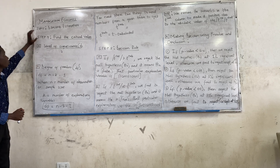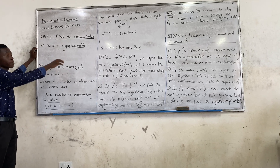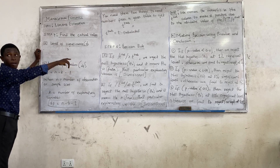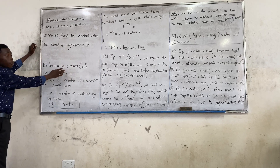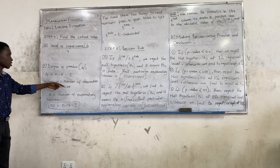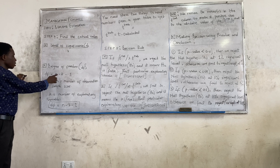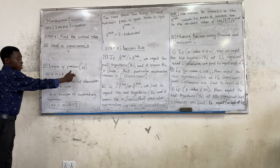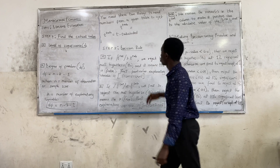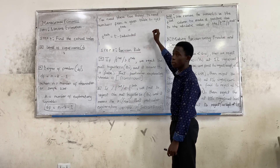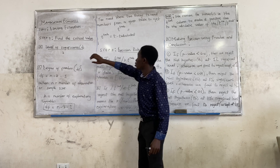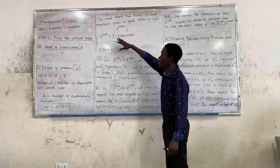Step four: find the critical values. We find the critical values using two pieces of information. First, the level of significance divided by two. Second, the degree of freedom, which is equal to N minus K minus 1, where N is the number of observations or sample size and K is the number of explanatory variables. You need these two terms to read from the T-table to get the T-critical value.